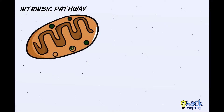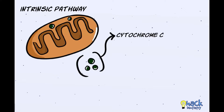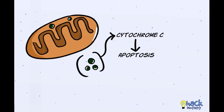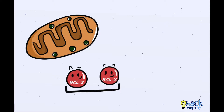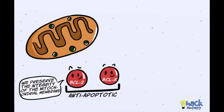In the intrinsic pathway, mitochondria become leaky and ooze out proteins called cytochrome C which initiate apoptosis. Usually, the cytoplasm and mitochondrial membrane harbor proteins called BCL2 and BCLX which are anti-apoptotic and preserve the integrity of the mitochondrial membrane, preventing apoptotic proteins like cytochrome C from leaking into the cytoplasm.